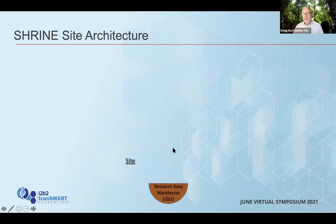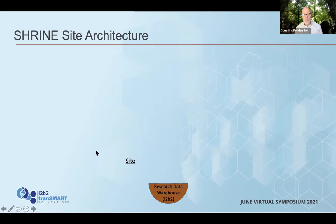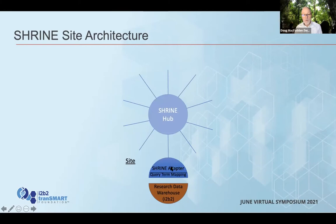Just a couple of architecture slides. With technical folks, this really helps to understand exactly what's going on. Here we are — we're a site, and we have basically an I2B2 instance with our data in it. To get to a SHRINE network, there must be some hub out there that someone's installed and is operating. You simply install the SHRINE adapter, connect it to your I2B2, and there's a layer of abstraction — query term mapping — and you are on the SHRINE network. We try to make it easy, at least for folks with I2B2 already, to join a network with modest effort.